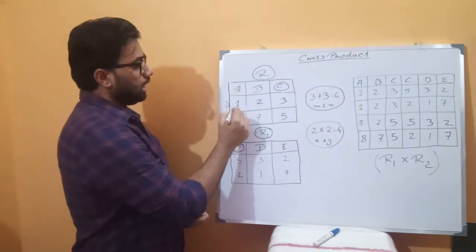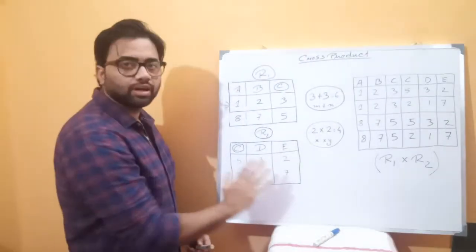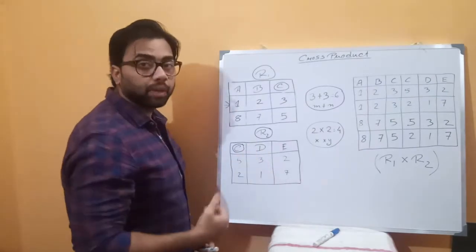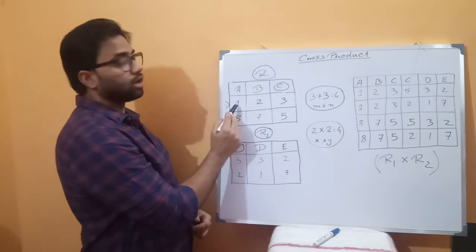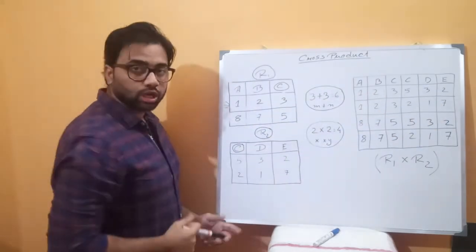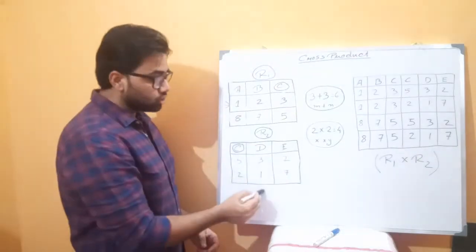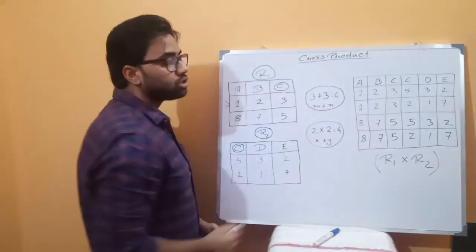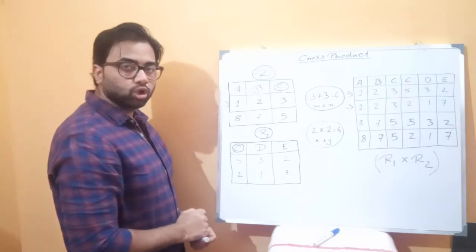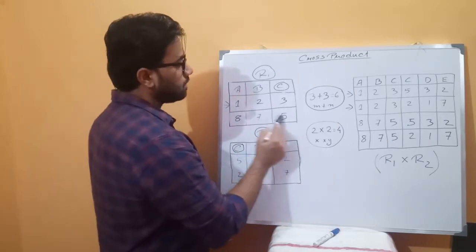Looking at the first row: each row is multiplied individually. For example, the first row values 1, 2, 3 are crossed with second table values 5, 3, 2 and again 5, 3, 2. Then in the second row, values 1, 2, 3 are crossed with 8, 7, 5 and then 2, 1, 7 — giving us the full cross product result.